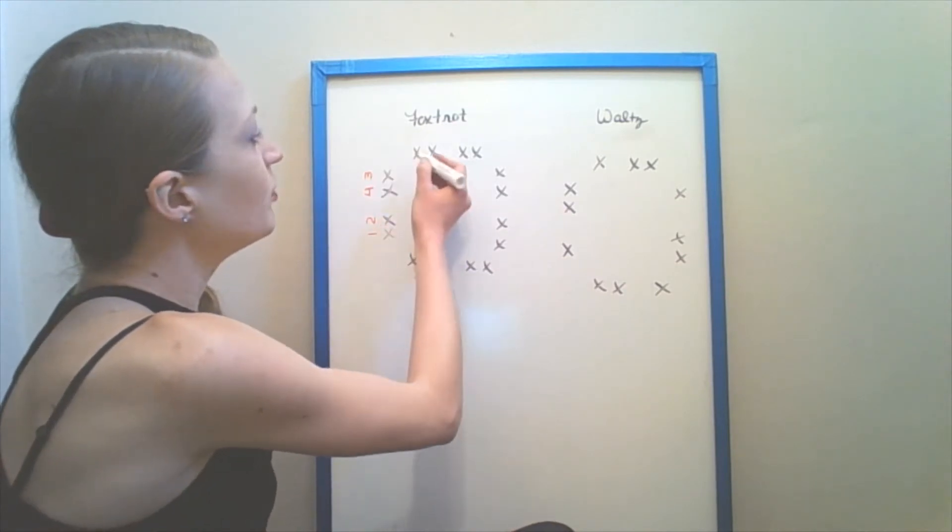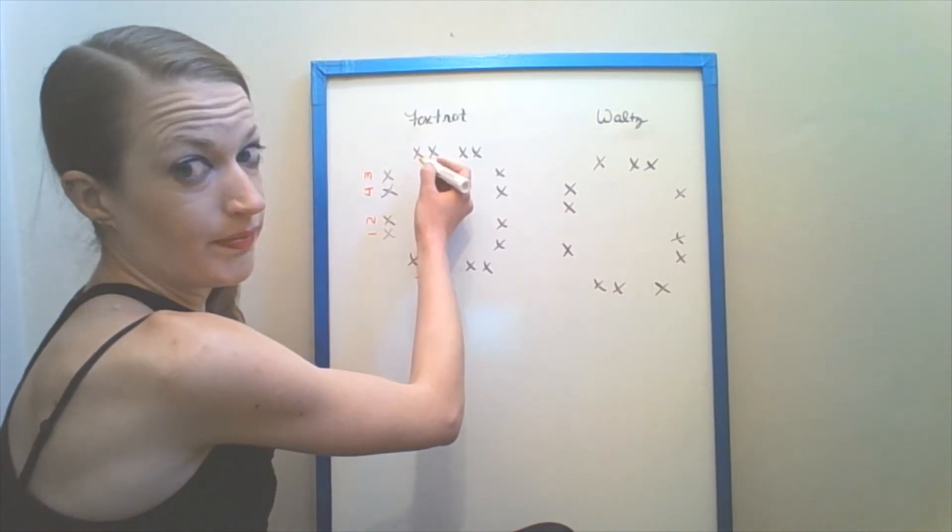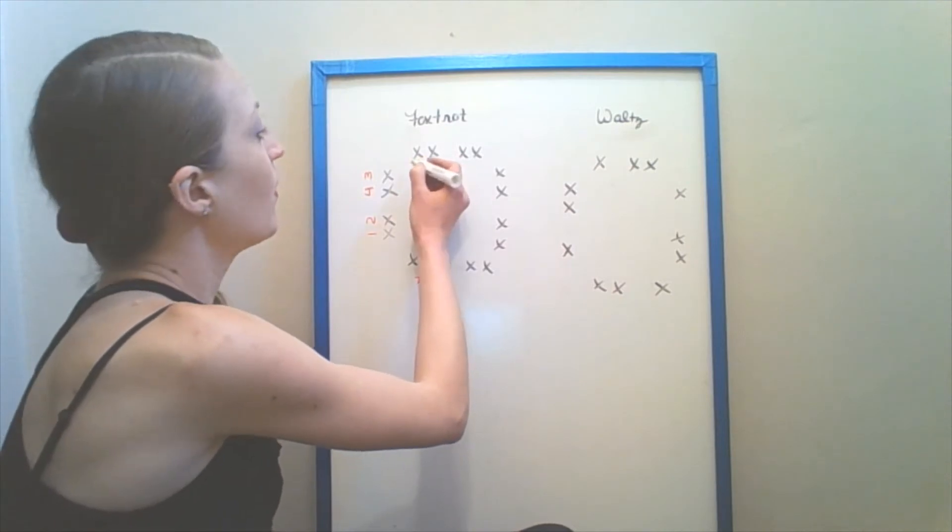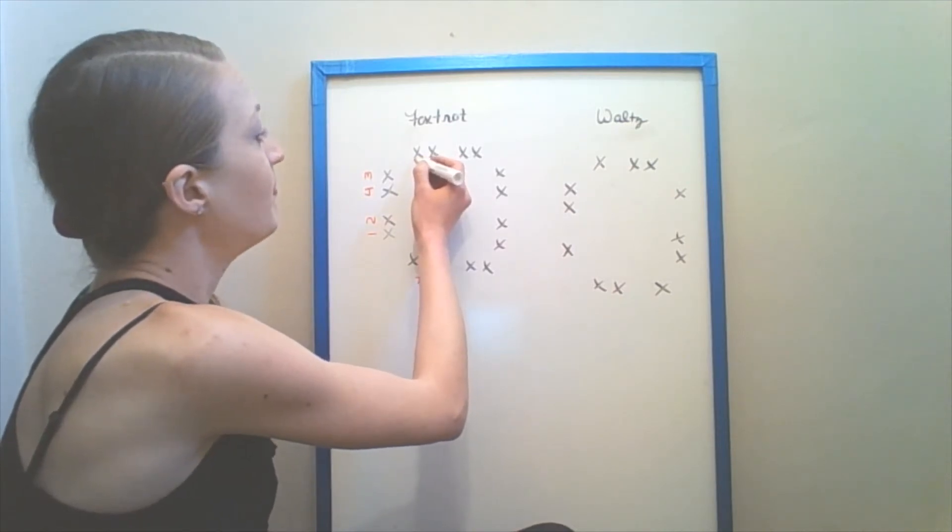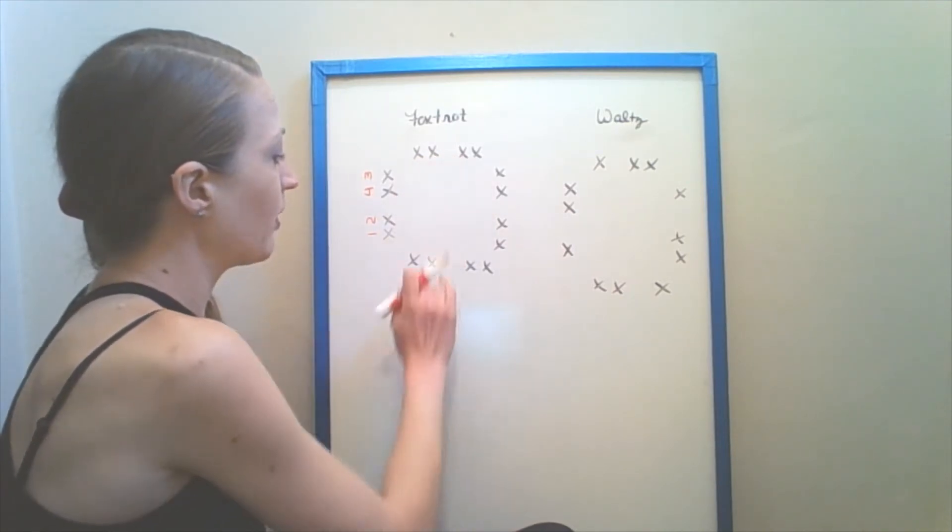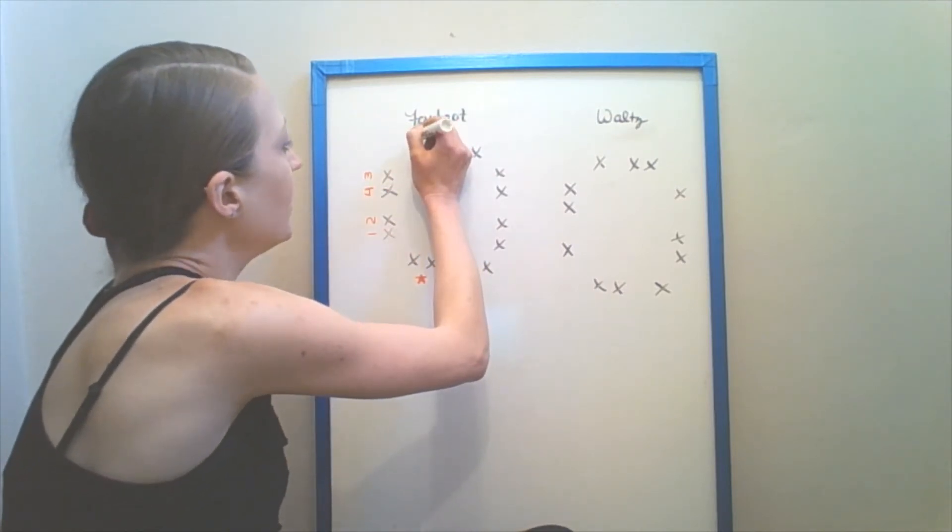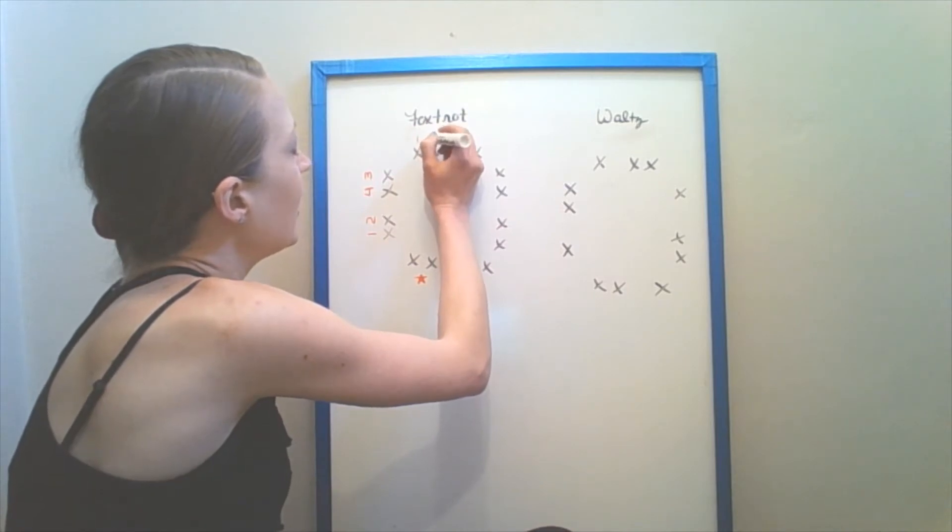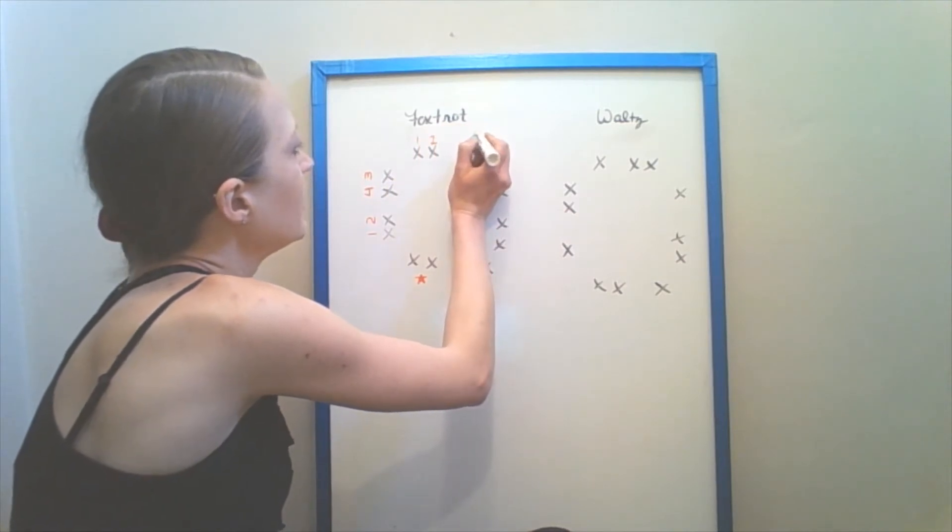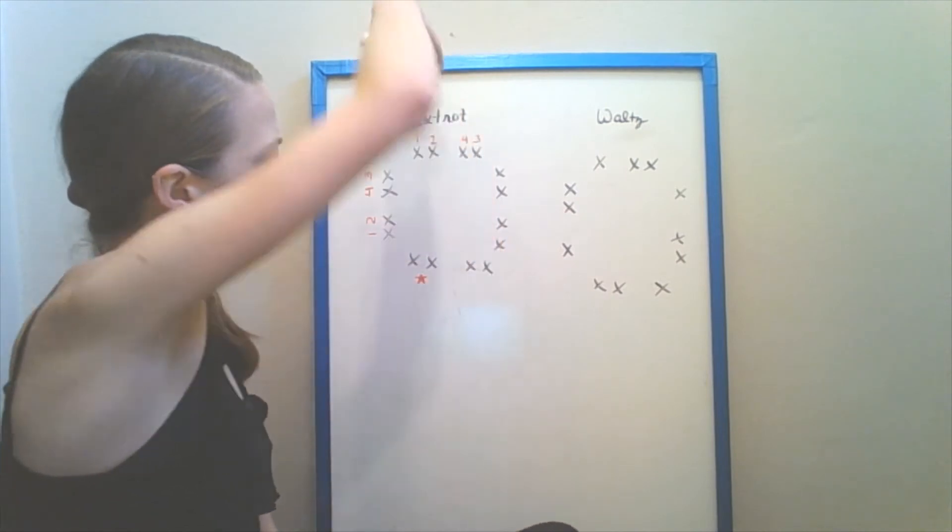From there I have to move my right foot. So I'm now going to face essentially backwards from where I started and I'm going to step one, and then I am together on two, side three, four. So now I'm facing this way.